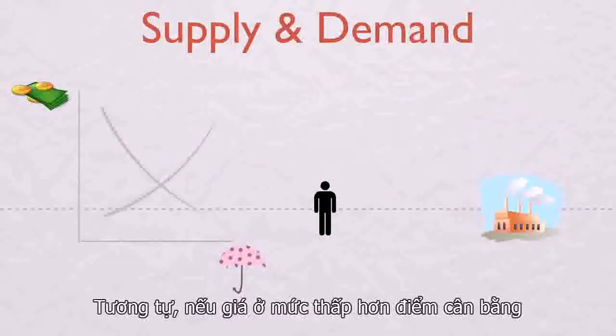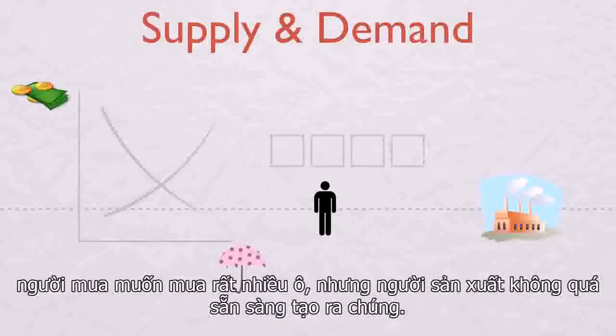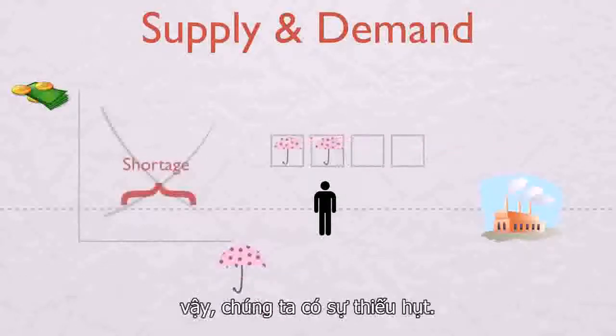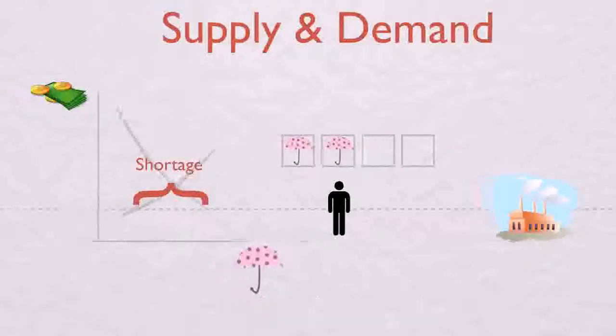Similarly, if the price of umbrellas is set below the market clearing price, buyers want to buy lots of umbrellas, but producers aren't so eager to produce that many. So we have a shortage of umbrellas.